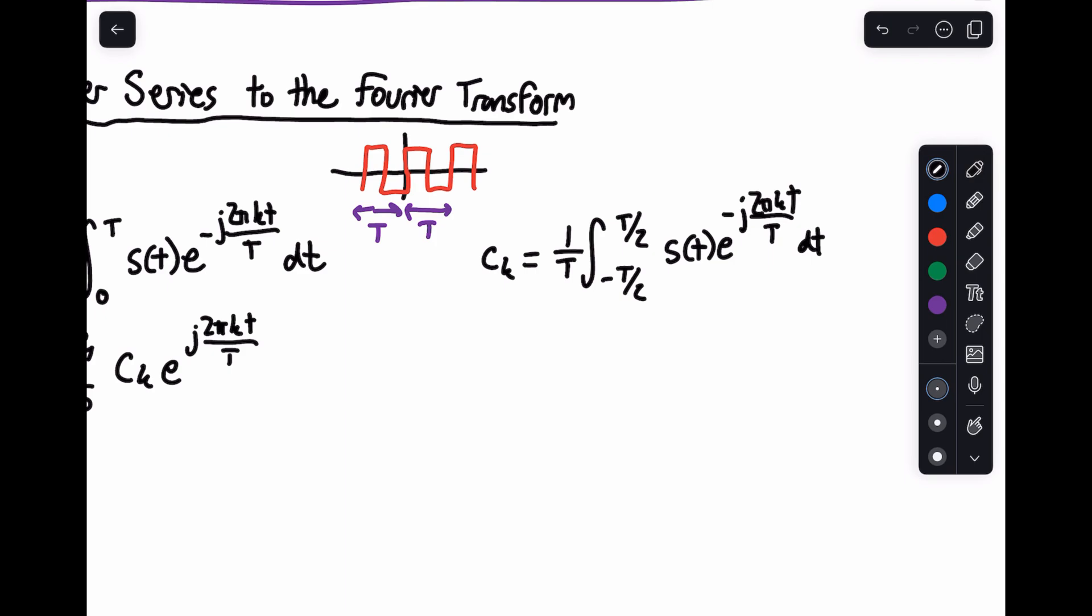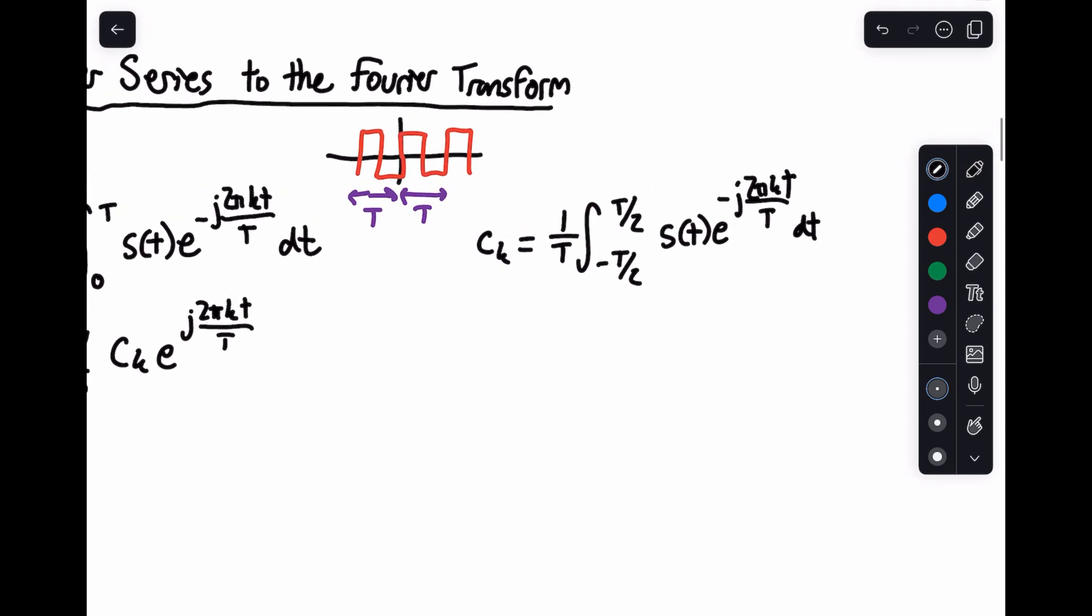Now what I'm going to do is define a new variable f. And what f is going to be is basically k over T. So this is representing some sort of fractional piece of the integer k divided by our period.